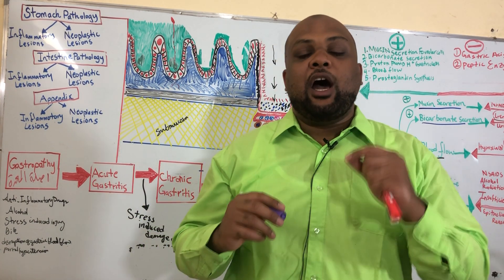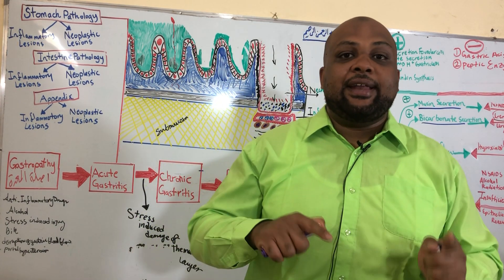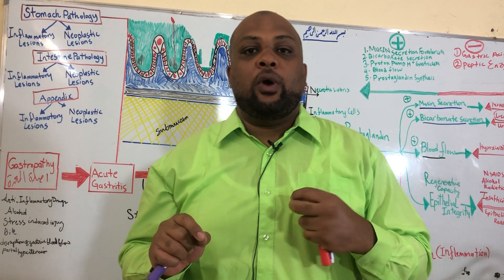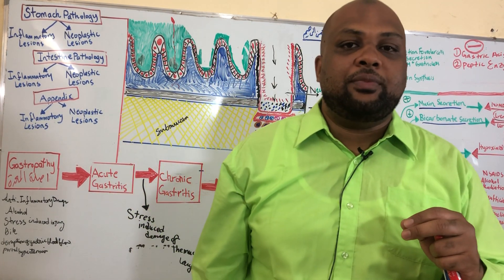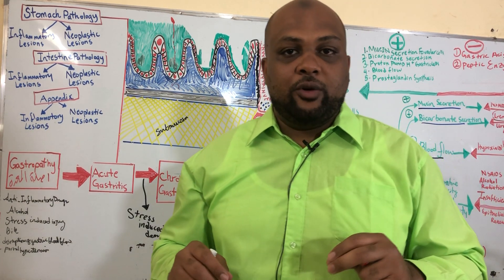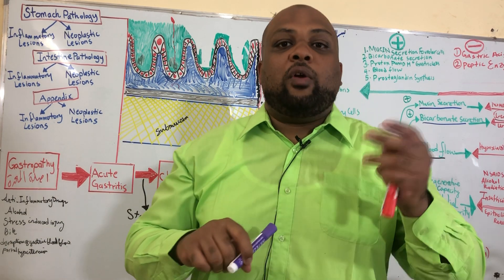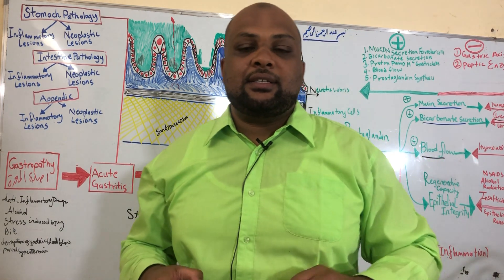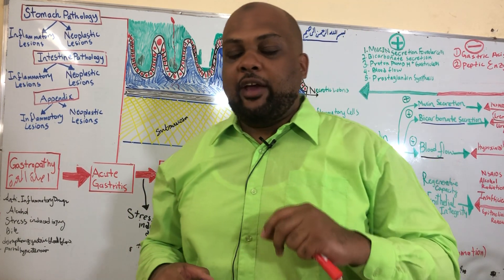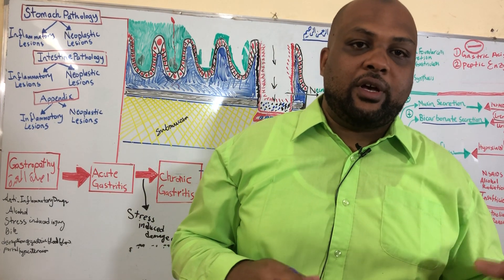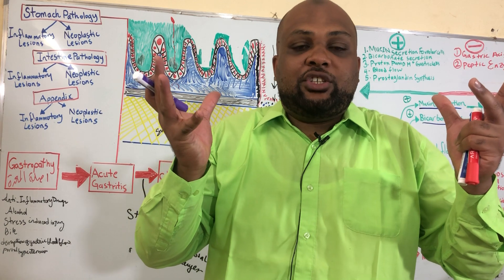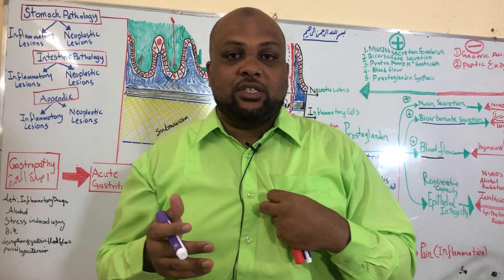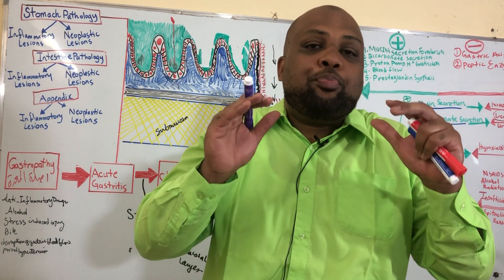Hypochlorhydria is what we see in H. pylori chronic gastritis, where the bacteria lead to a drop in acidity — an increase in pH — because H. pylori has ureases and is able to synthesize ammonia from urea, elevating the pH and causing hypochlorhydria, which helps H. pylori thrive.